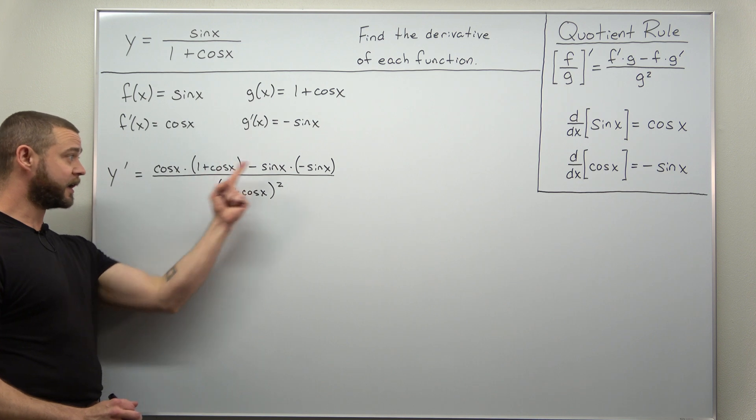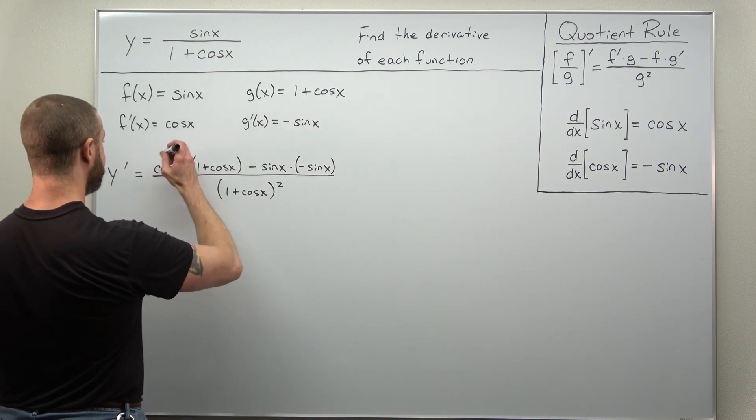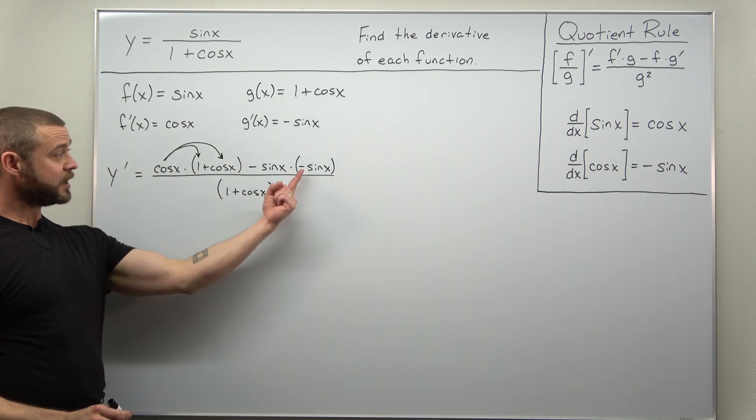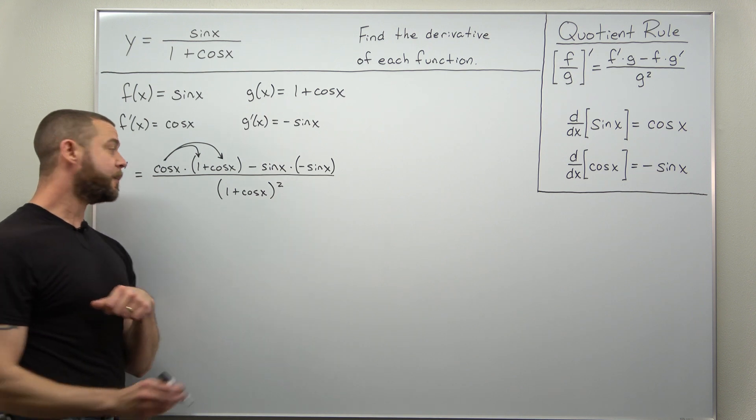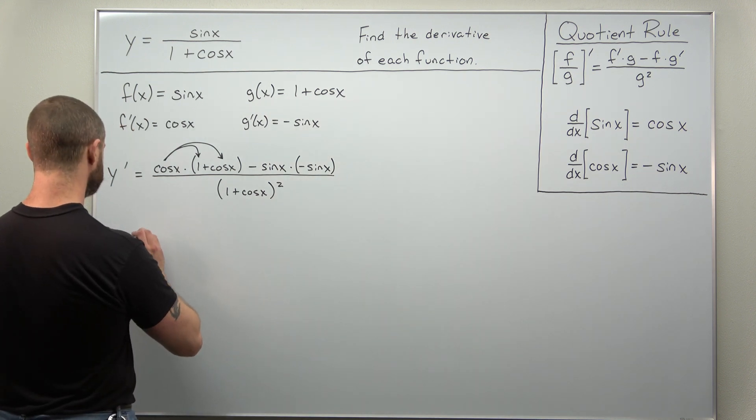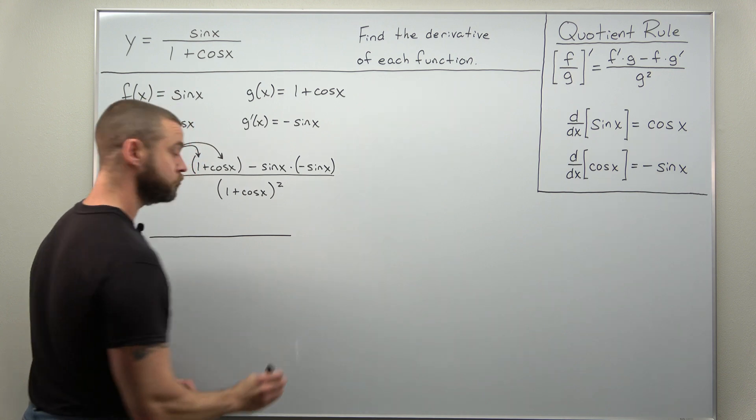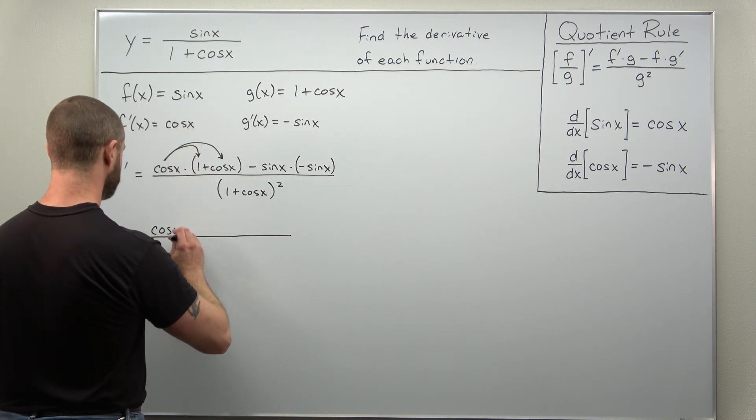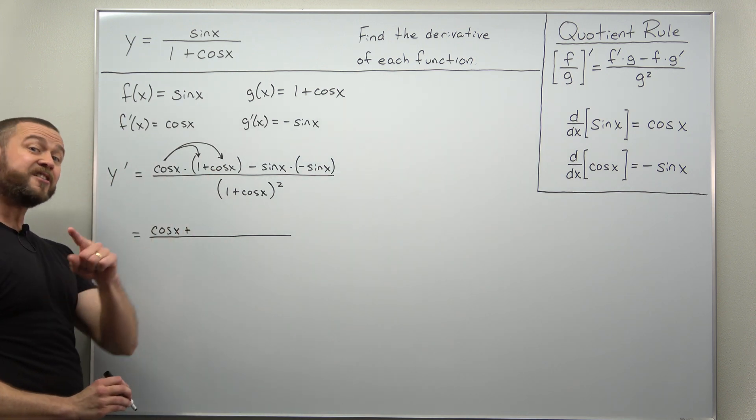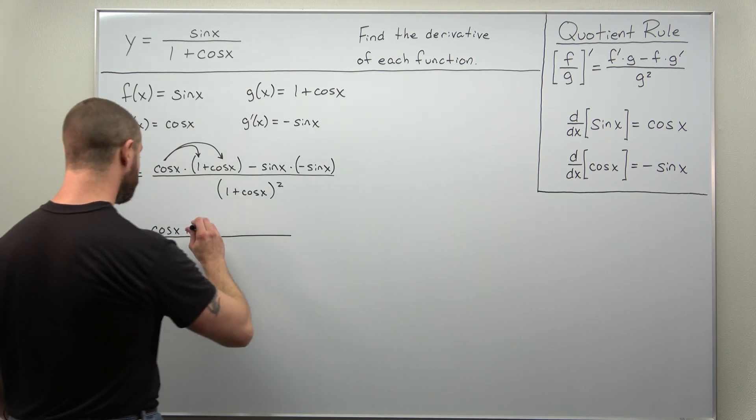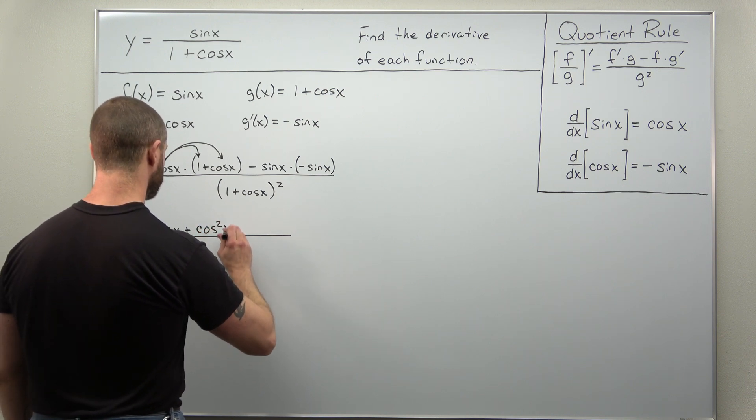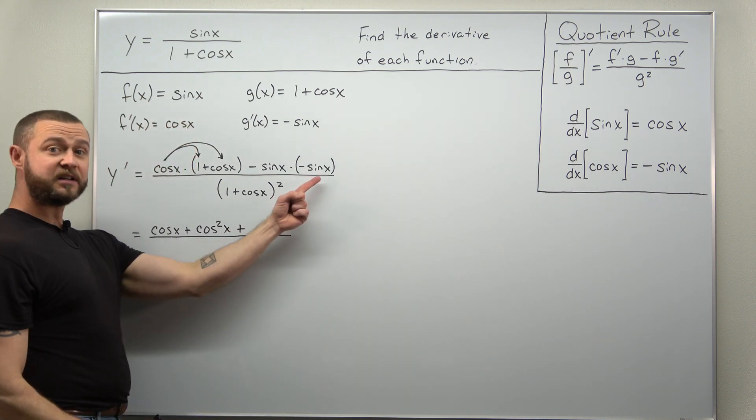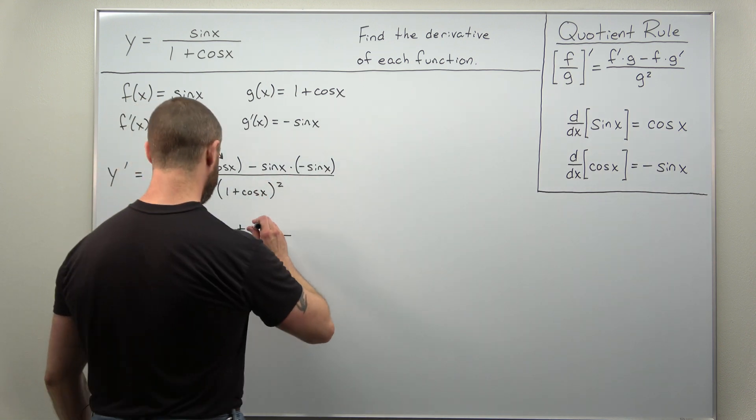Now we can simplify the numerator by distributing cosine of x through the parentheses and then noticing we have a negative times a negative which will become a positive. All right we're going to take our time with this we're going to distribute here and get cosine of x. Distribute again and you're going to get plus cosine squared of x. The two negatives cancel to a positive and we'll write sine of x times sine of x as sine squared of x.